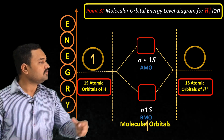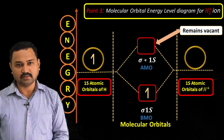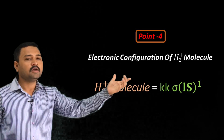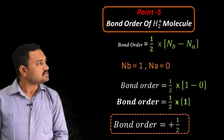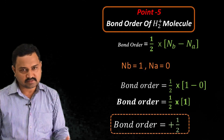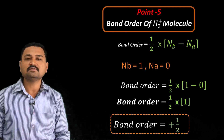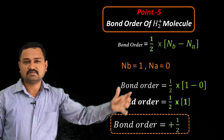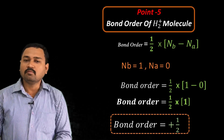Only one electron occupies the lowest energy state, that is sigma 1s bonding molecular orbital. Point number fourth: the electronic configuration of H2 plus ion equals KK into sigma 1s¹. Point number fifth: calculation of bond order. Bond order = 1/2 × (Nb − Na). Nb equals 1, as only one electron is in sigma 1s bonding molecular orbital. Na equals 0 as the antibonding molecular orbital is vacant. Therefore bond order = 1/2 × (1 − 0) = 1/2.